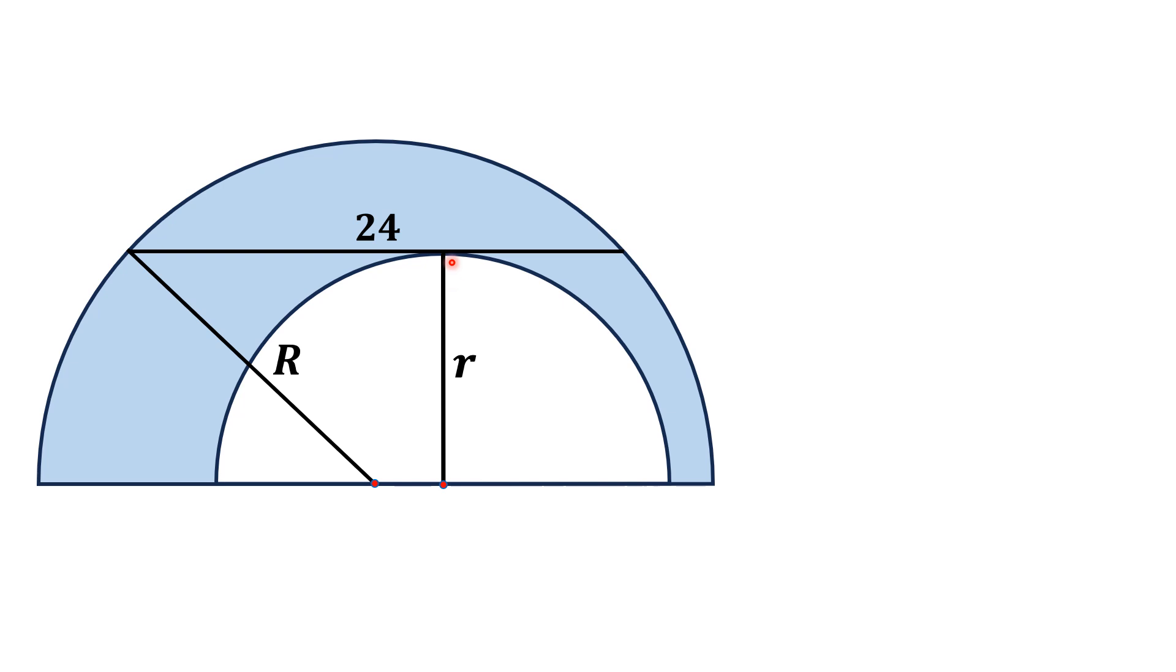If this length is R, then if we draw this line, this is also R. Now this line segment is a radial line of the outer semicircle. We know that if we draw a radial line, it divides the chord into two equal parts.